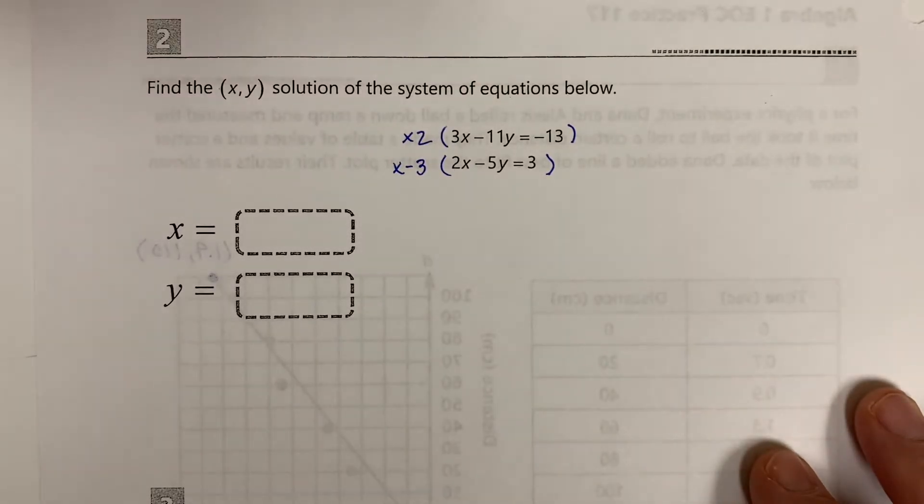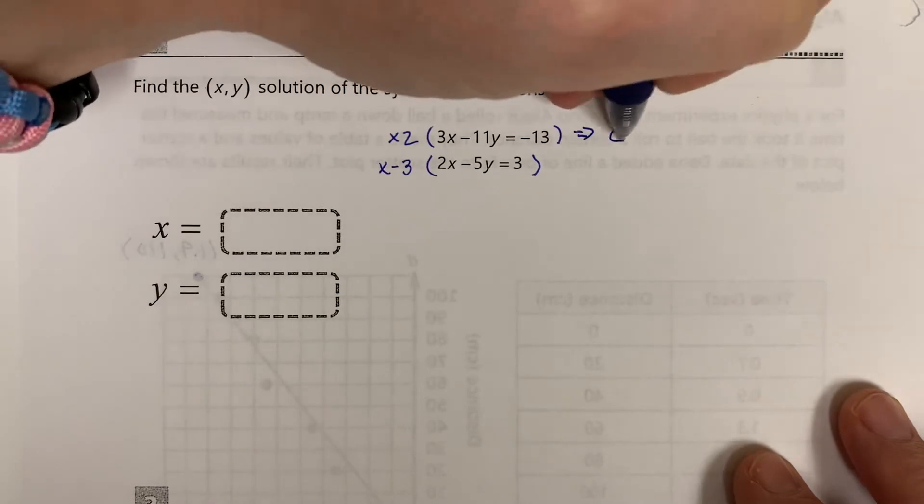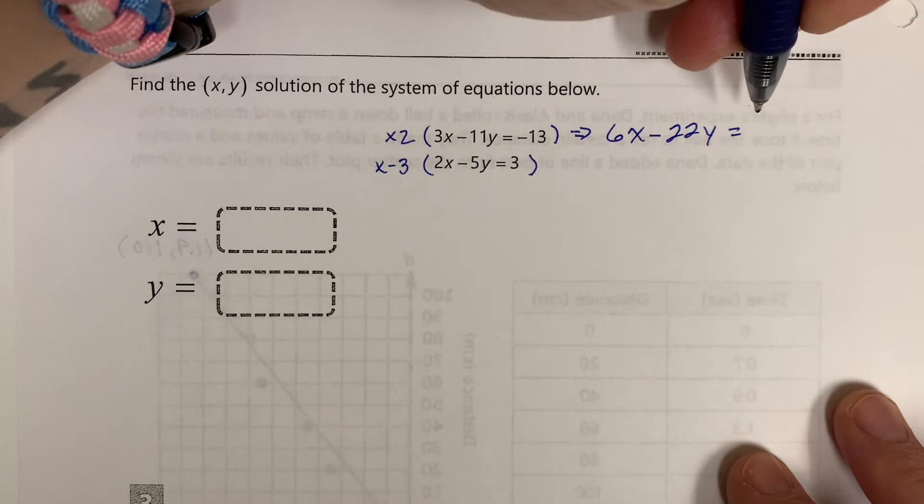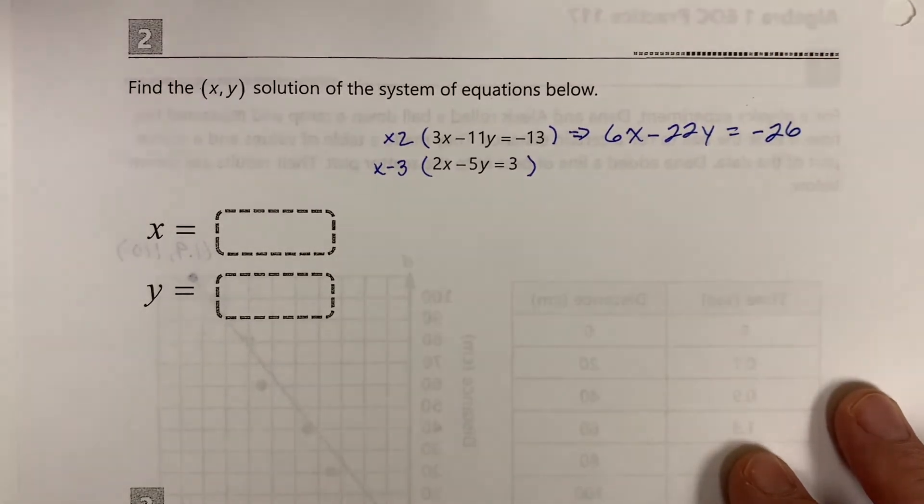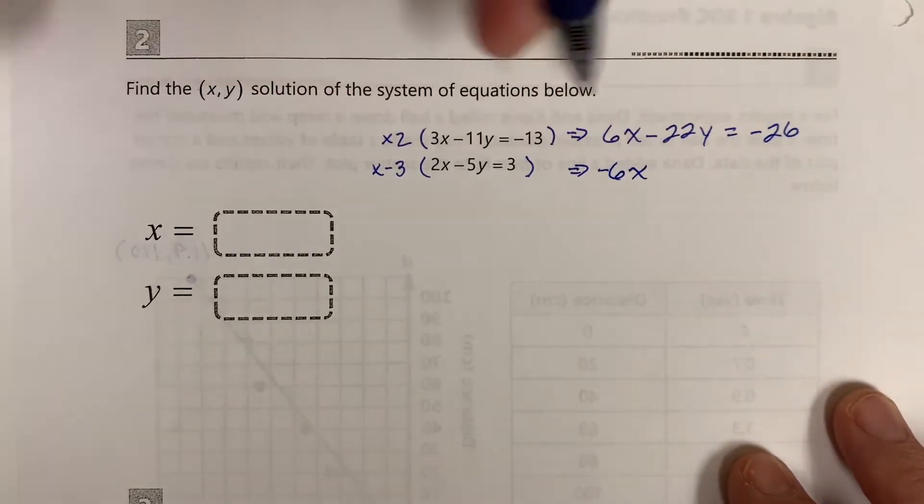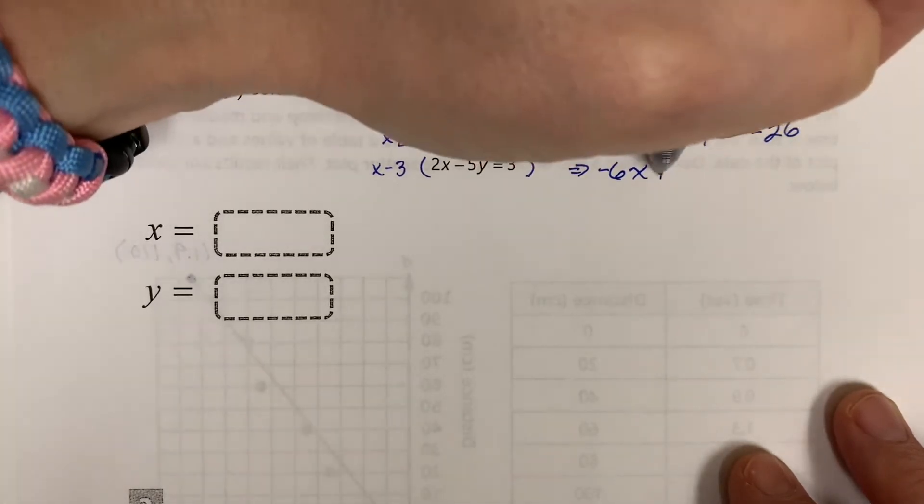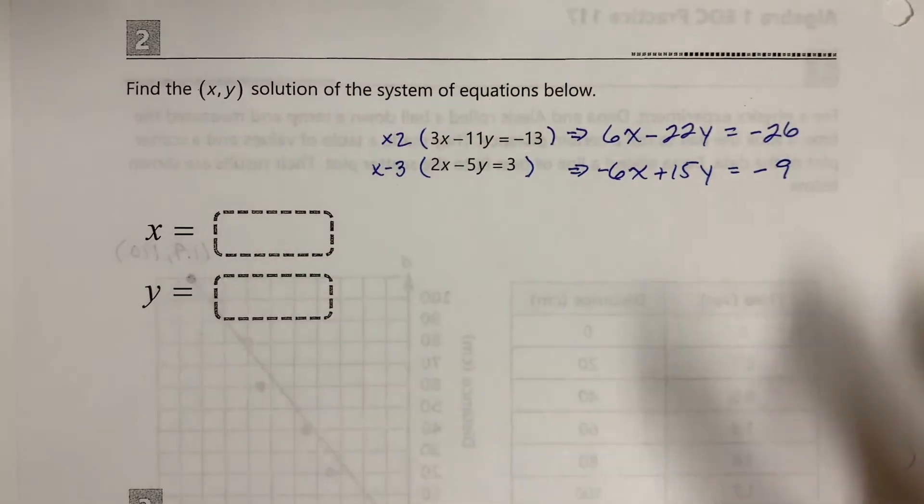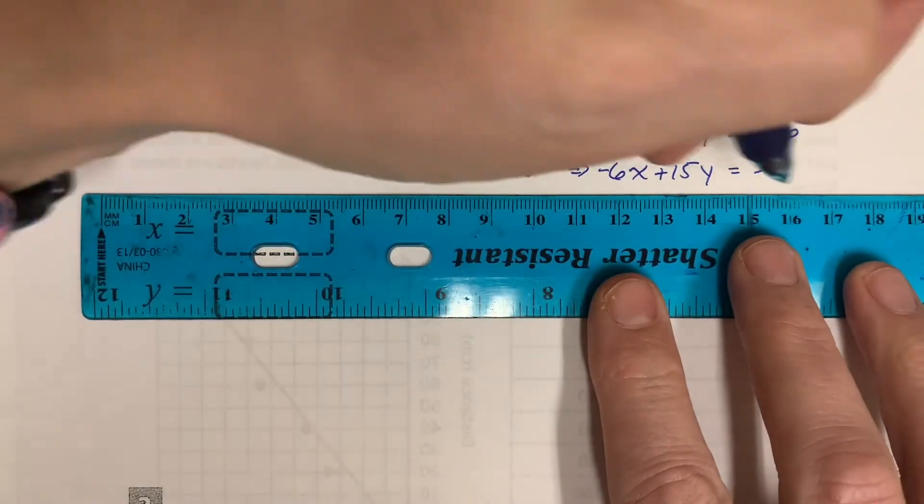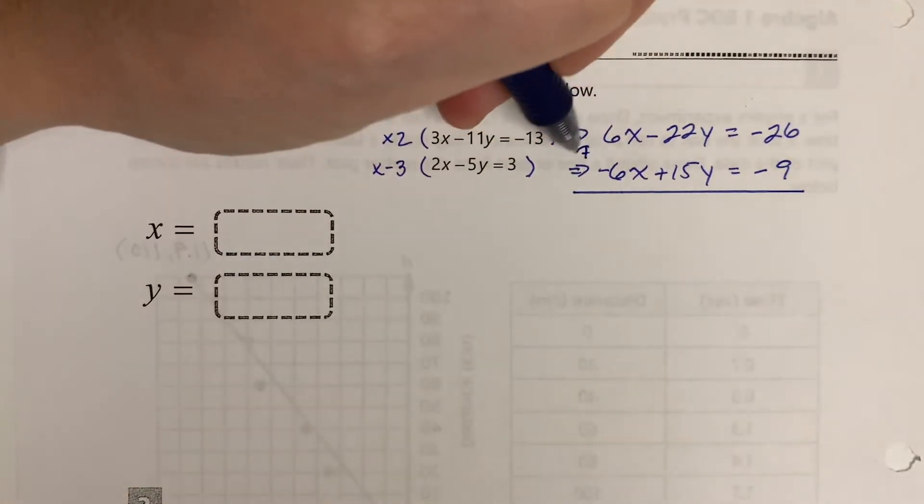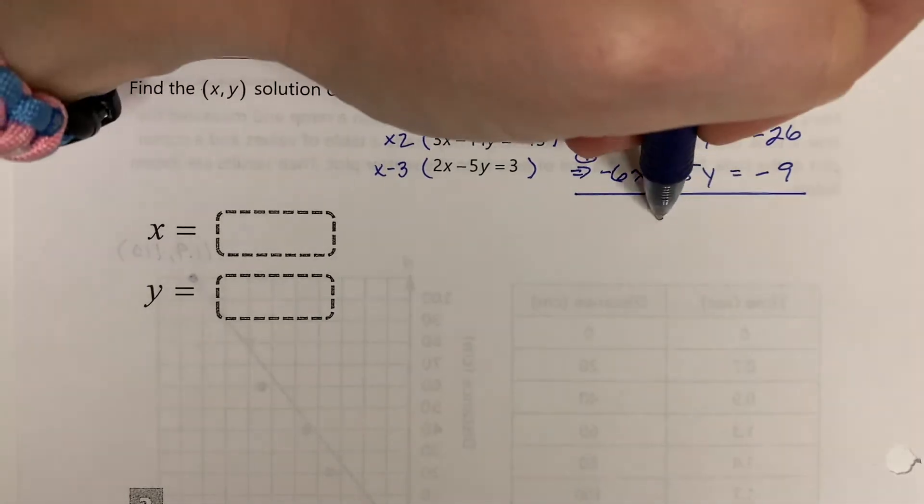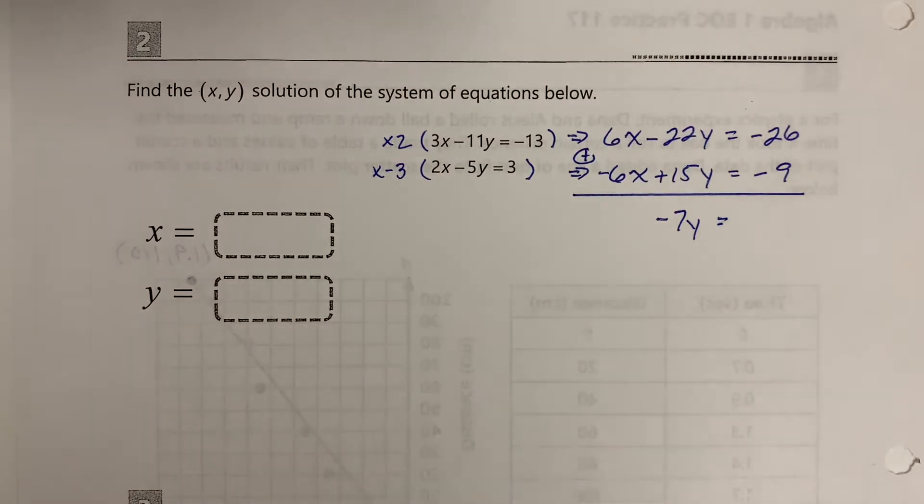Now I'm going to get 6x minus 22y equals negative 26. Down here I get negative 6x plus 15y equals negative 9. Let's go ahead and add those two equations together. The 6x's are going to cancel. Negative 22 and 15 make negative 7y equals, and negative 26 minus 9 is negative 35.